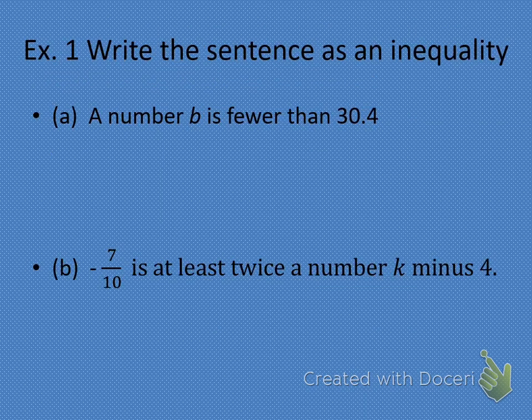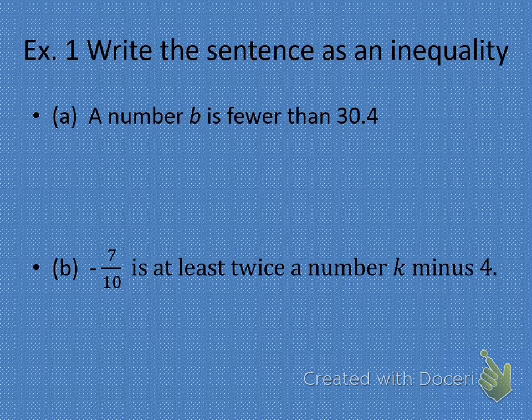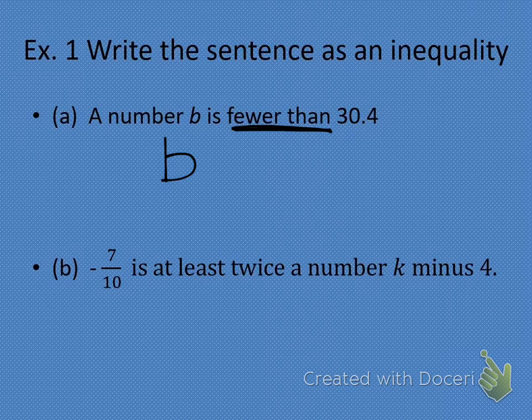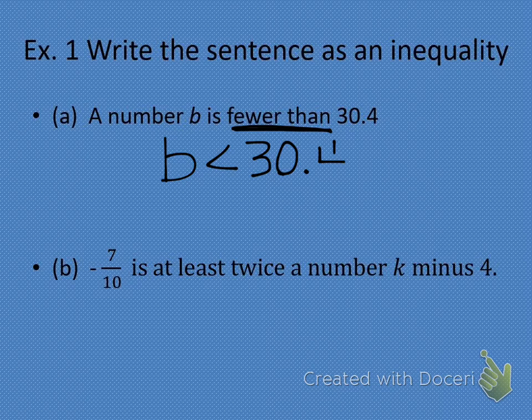Let's look at example number one — write the sentence as an inequality. Letter A says: a number B is fewer than 30.4. We have a variable in the problem this time, so we write B. What inequality symbol do we use for 'fewer than'? Less than. Very good. So B is less than 30.4. That's how we translate that sentence into an inequality. Any questions?